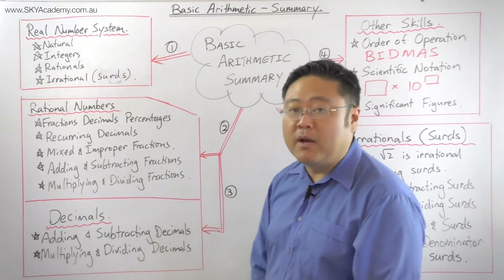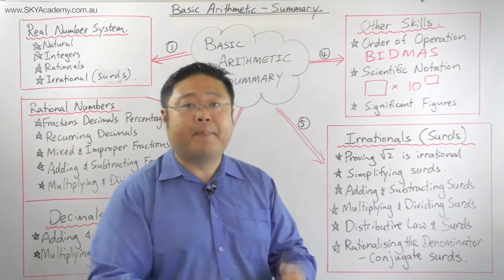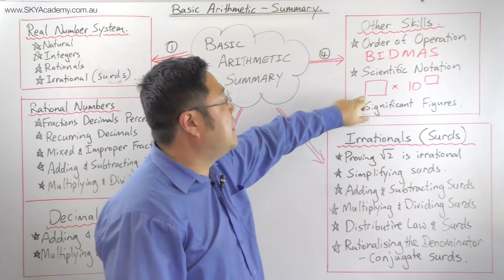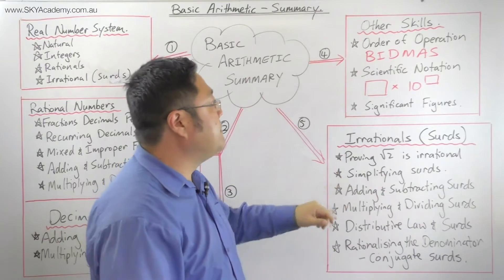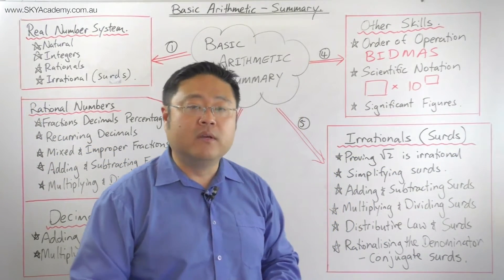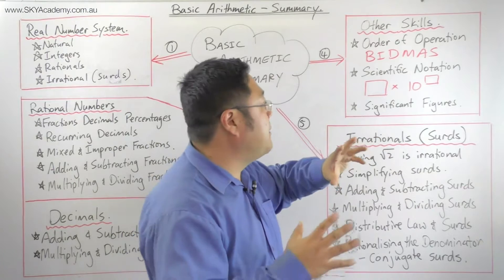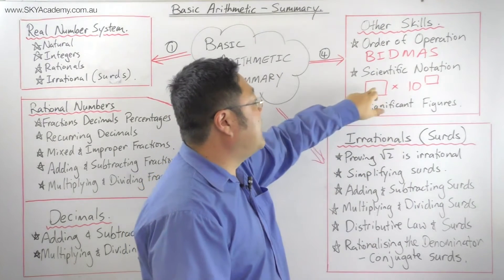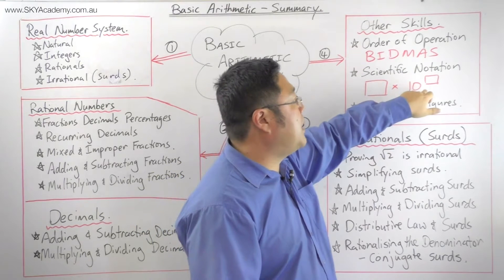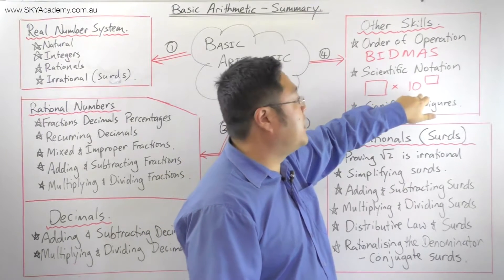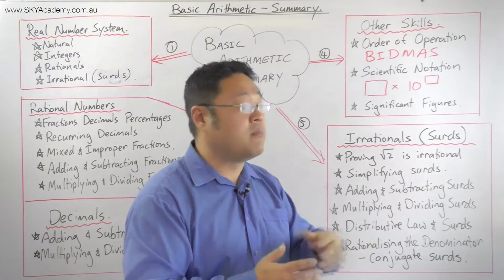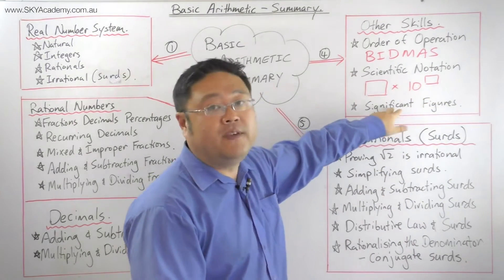We also looked at decimals — adding, subtracting, and multiplying them. This led us to other basic skills including significant figures and scientific notation. Scientific notation is a way of writing unusually large or small numbers: it consists of a number between one and ten expressed as a decimal, followed by an order of magnitude written as 10 to the power of a positive or negative whole number.